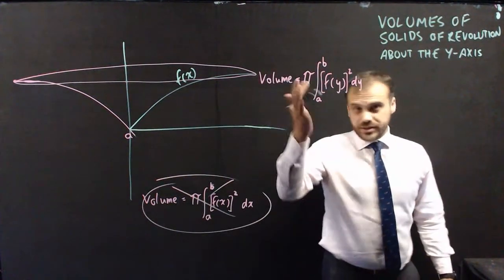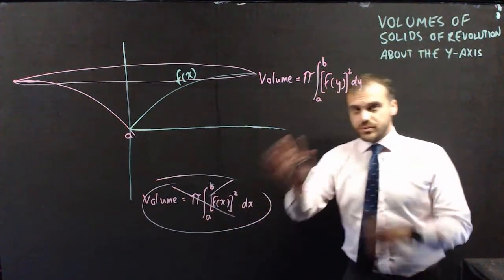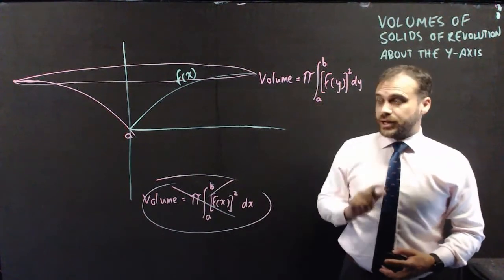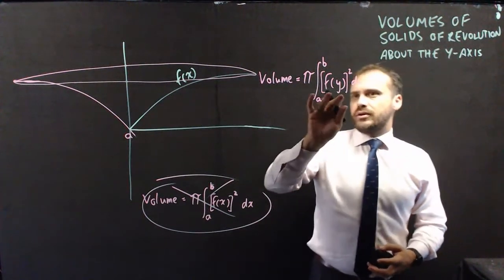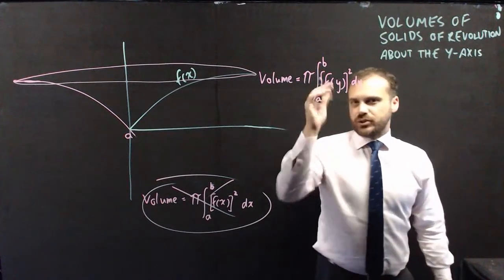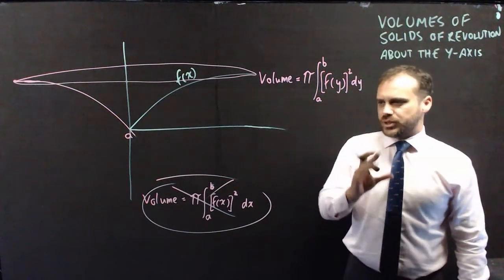We need a new formula. So you can see it looks very similar to this with some key differences. Volume equals pi times the integral between b and a—b and a are not what you think they are. Function of y squared, function of y, and then with respect to y on the end. That's something a little bit different as well.